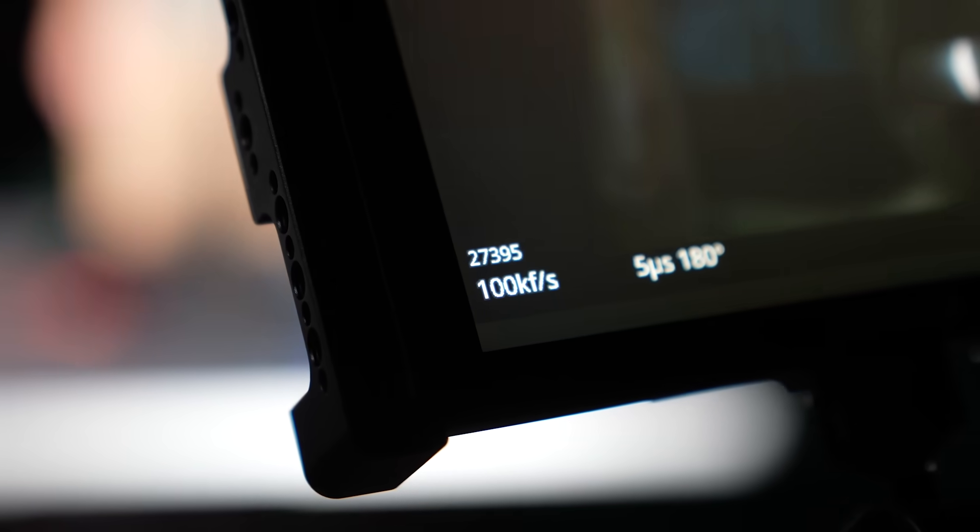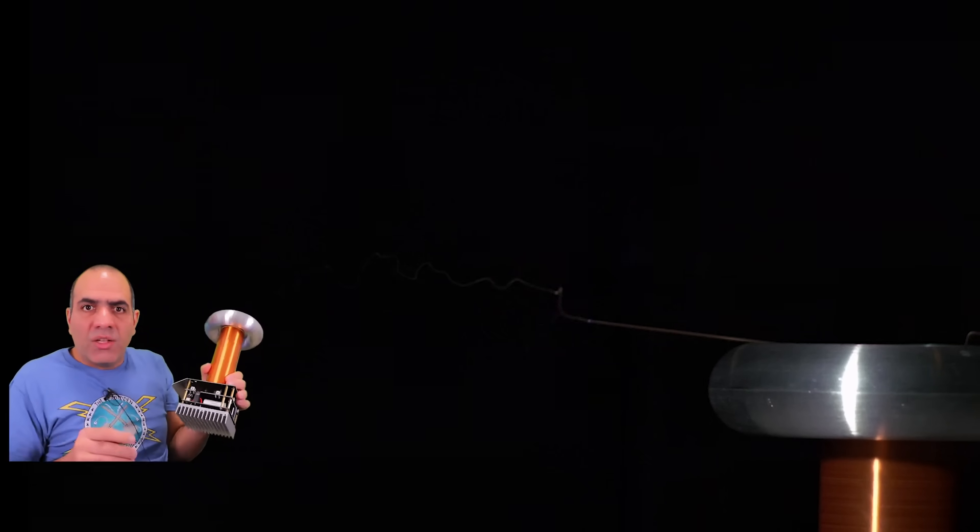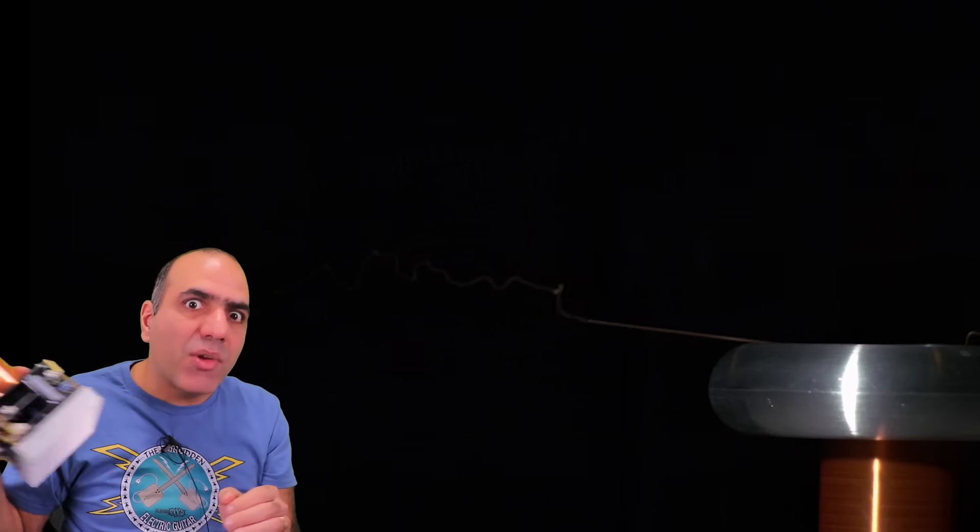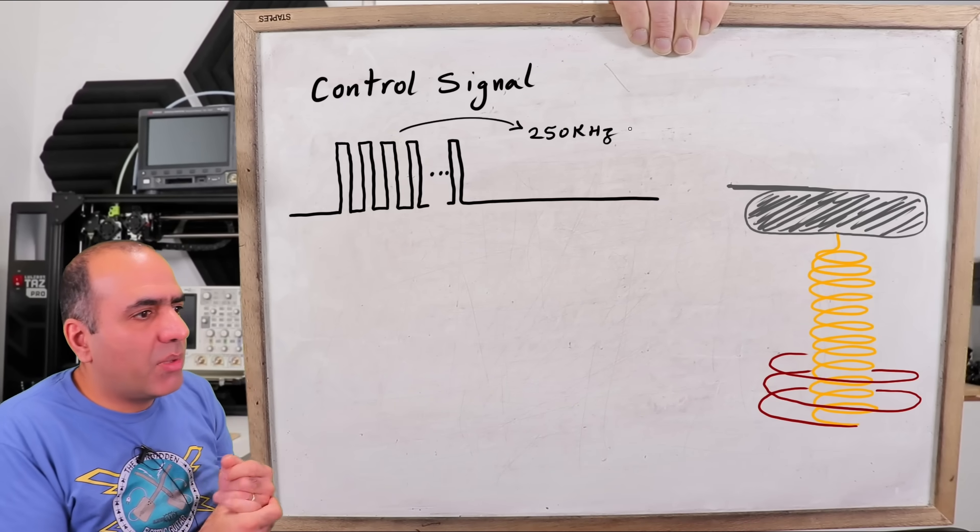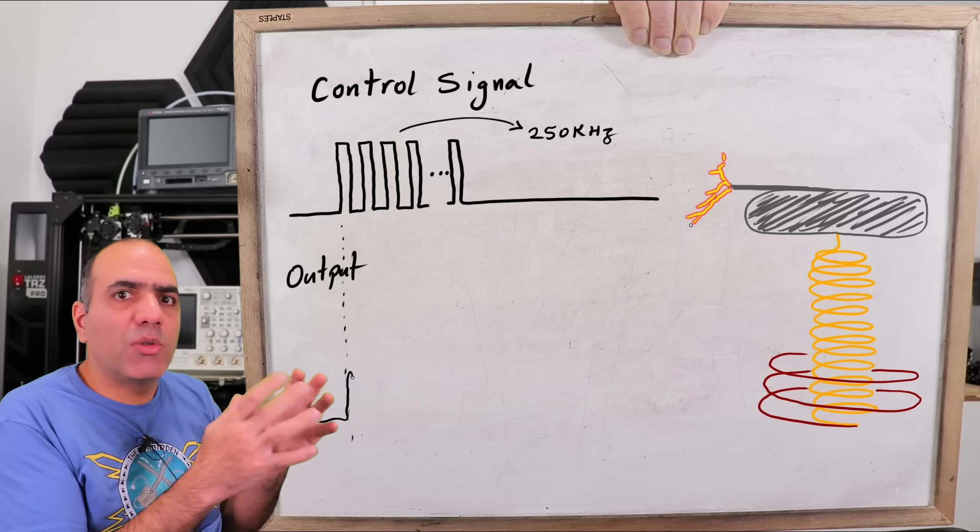Okay, we'll start at 100,000 frames a second. That's the starting point. The arcs from this Tesla coil are created in pulses of resonance frequency. This is the control signal.